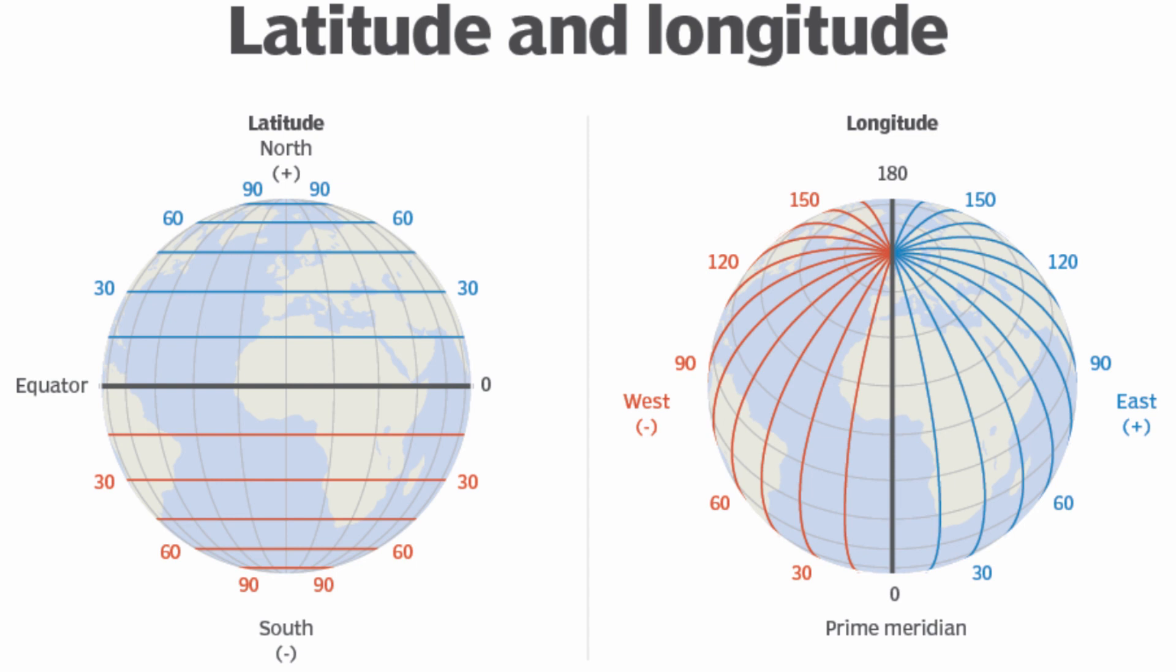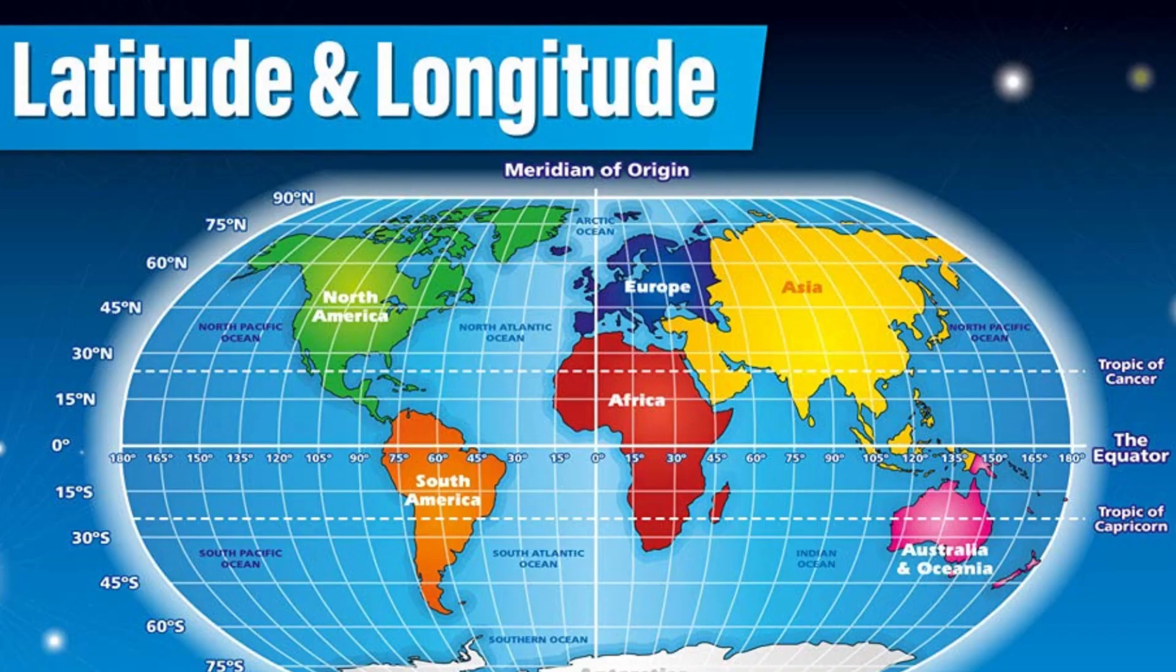GPS coordinates are usually expressed as the combination of latitude and longitude. Lines of latitude measure degrees of distance north and south from the equator, which is zero degrees. The north pole and south pole are at 90 degrees in either direction. The prime meridian, located in Greenwich, UK, is zero degrees longitude, and the lines of longitude coordinates are measured according to 90 degrees east and west from that point.